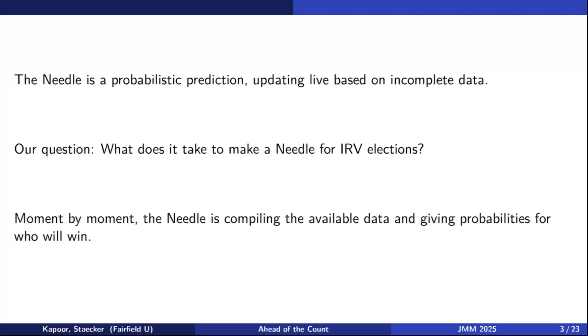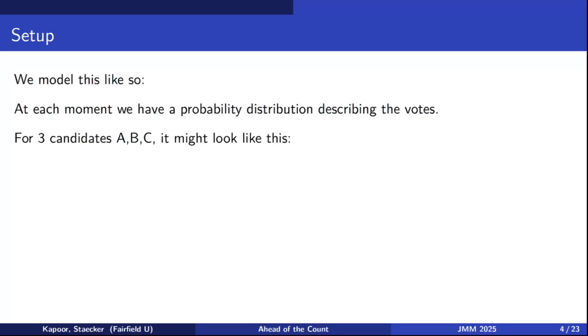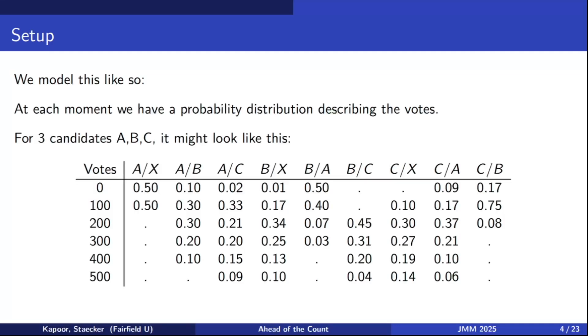Here's the abstract setup that we're going to model the situation on. At each moment in time, we imagine that we have a probability distribution describing the votes. For three candidates, say A, B, and C, your probability distribution might look something like this. This is a big bunch of data about how many votes you think everybody is going to get. The column headings here represent certain rankings. So when it says A slash X, that means these are people who voted for A in the top position and then ranked no second place candidate. A, B means they ranked A first and then B as their second choice. This 0.33 means that the probability that 100 voters will rank A first and then C, that probability is 33%.